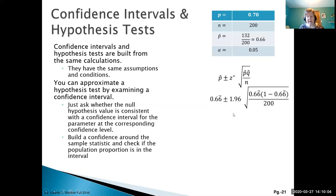Plugging in the numbers: our sample proportion 0.66 plus or minus our z-critical of 1.96, times the spread. Remember that this calculation - the square root of p-hat q-hat over n - is our standard error, which comes out to 0.0333.